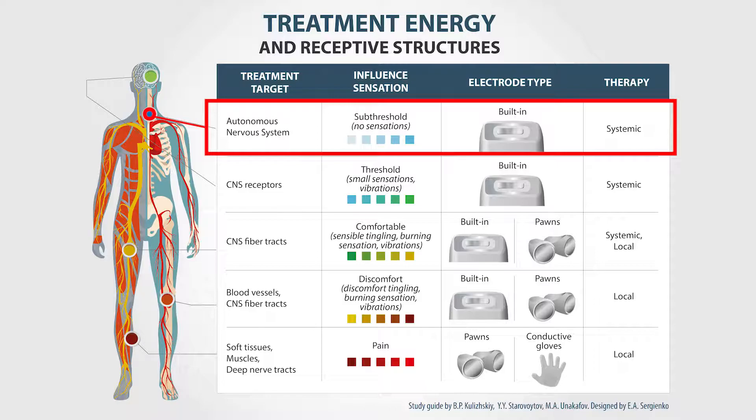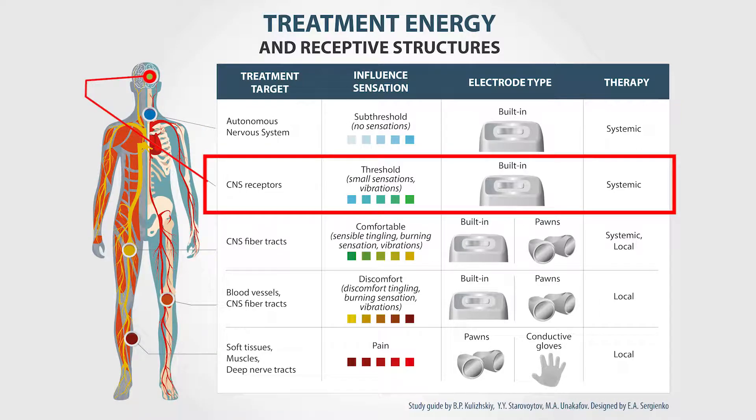At the threshold level, the scanner focuses on the receptors of the central nervous system. It takes more energy to activate them. This level is used in systemic therapy and digital techniques, and we use the built-in electrode.